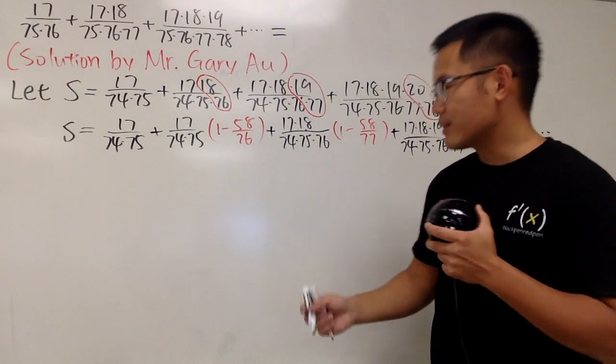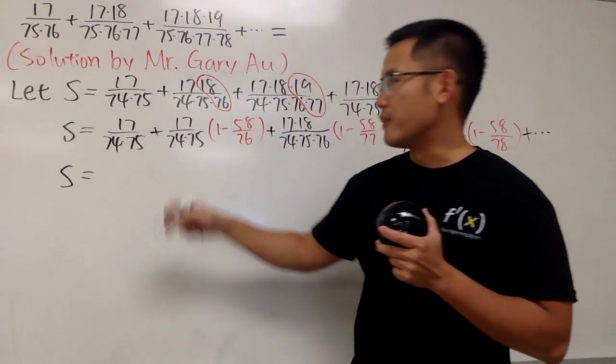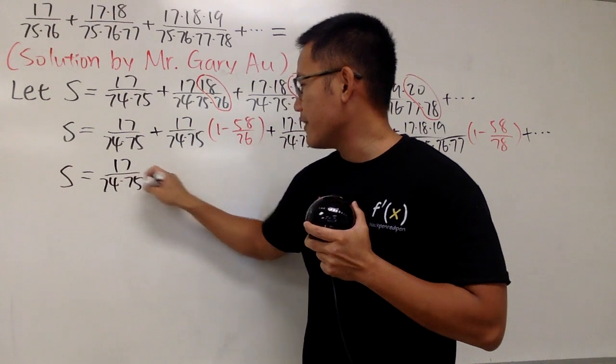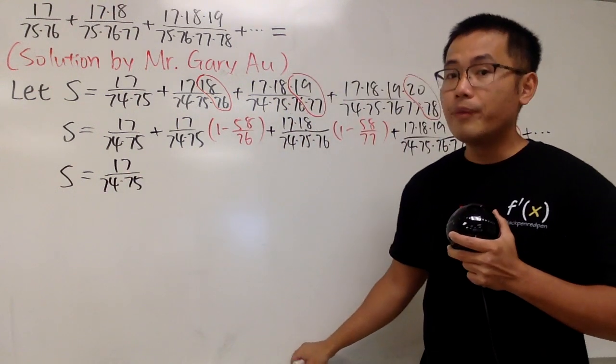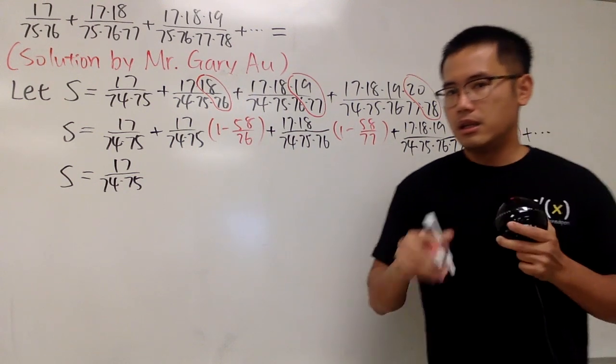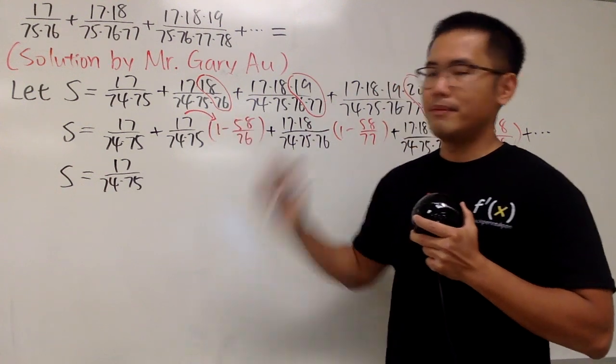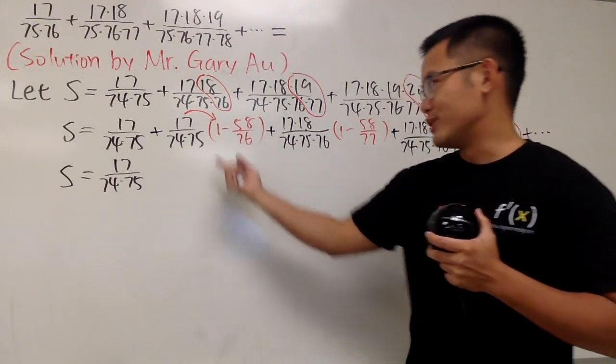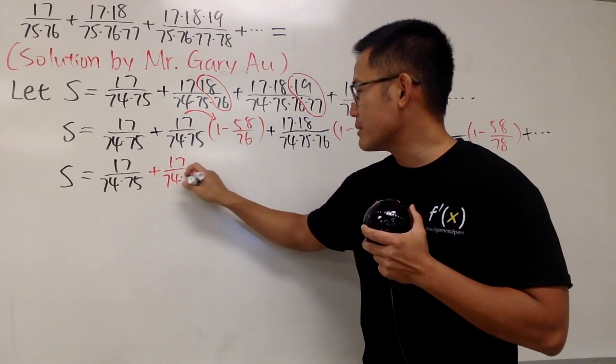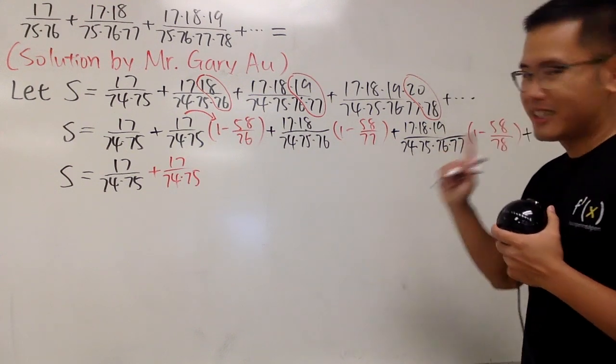Let me show you. So we continue. We will just write plus, this right here stays, 17 over 74 times 75. But we can write this fraction as 1 minus 58 over 76. Of course, you can just work this out and see that this is indeed equal to that. And the reason for this is, we have more terms to work with. And sometimes when we are working with infinite series, you will actually see the series inside of itself. You will see what I mean by that.